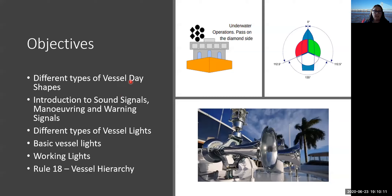This is what we're going to look at this evening: different types of vessel day shapes, hopefully demystifying what they all are; an introduction to some of the sound signals for maneuvering and warning; a look at the different types of vessel lights — what are our lights made up of, some basic vessel lights, and working lights. We'll also look at vessel hierarchy — who gives way to whom. At the end there are 16 questions in a quick quiz, so get your notebooks and pens ready.